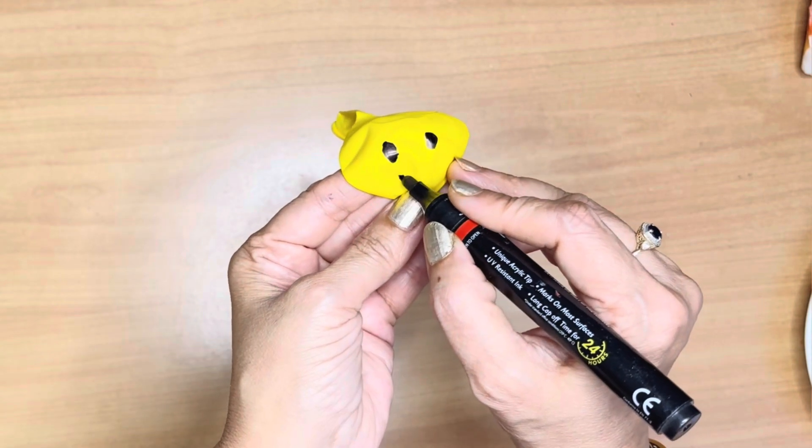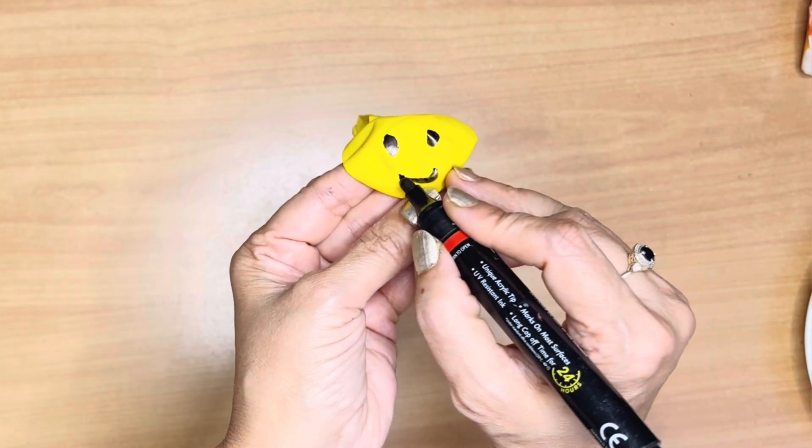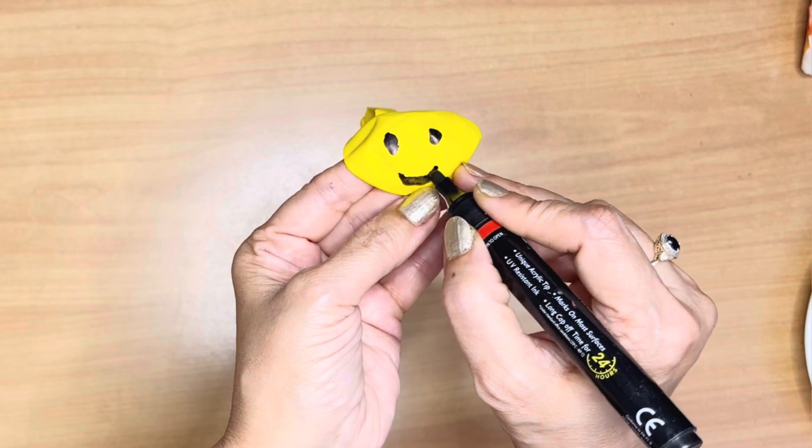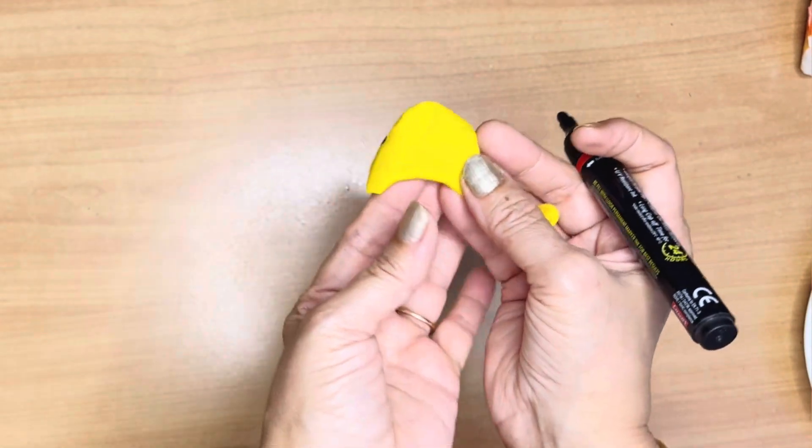First, let's draw a cute puffer fish on the balloon, two eyes, a smile and spiky fins.